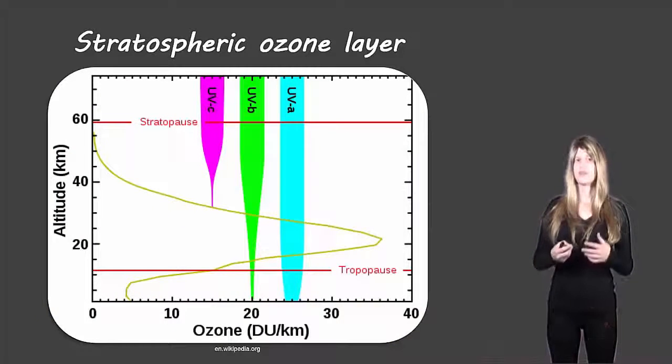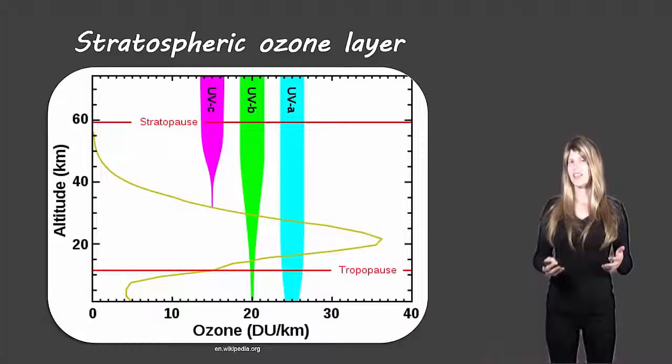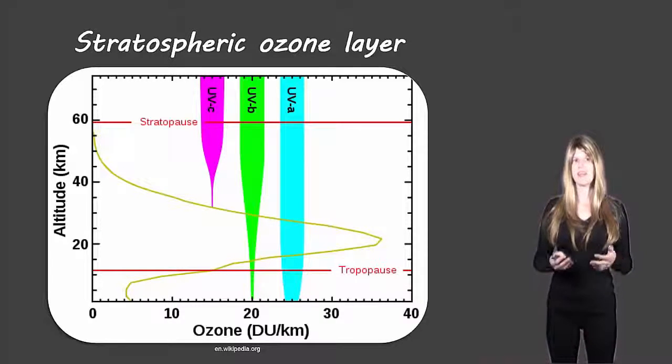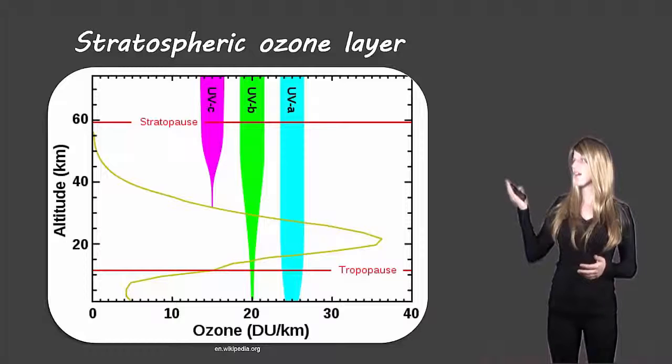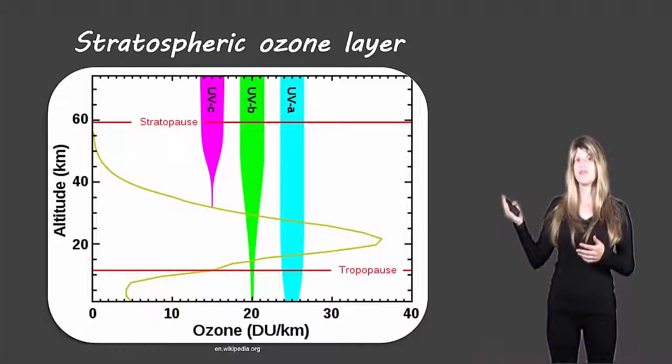So first of all we'll look at the stratospheric ozone. This is the ozone layer and this is something that we need to worry about protecting because it helps us get rid of the UV light that's coming down towards earth.